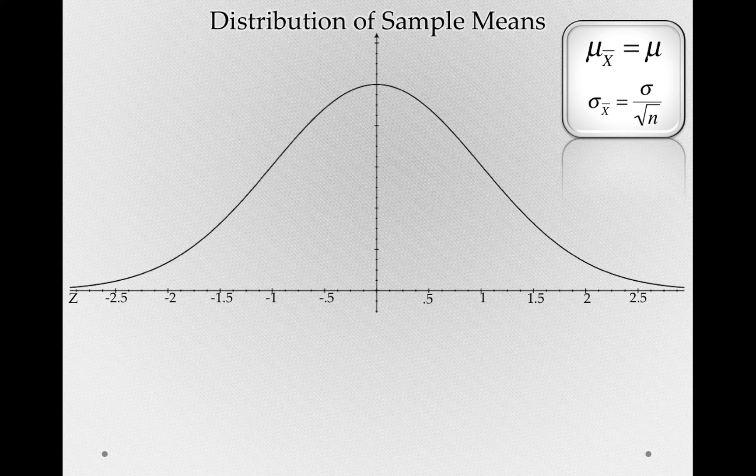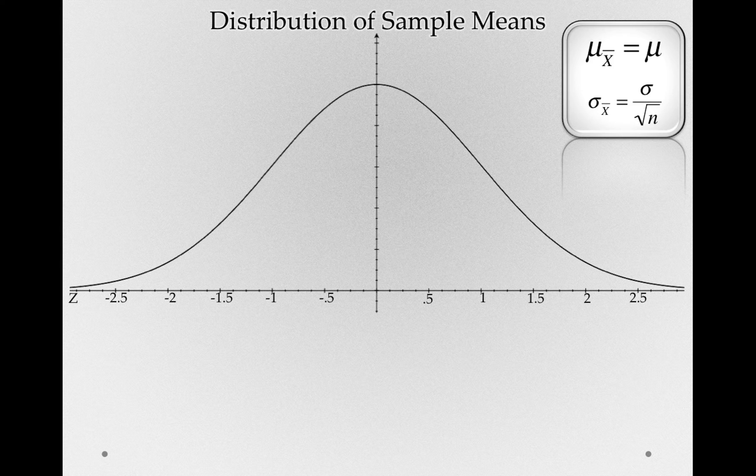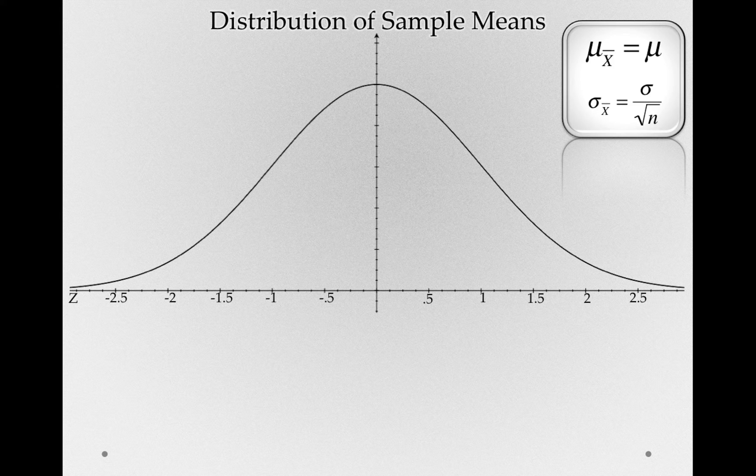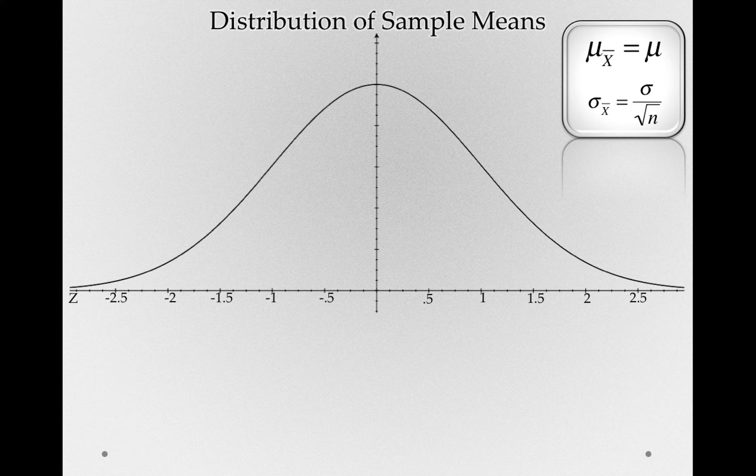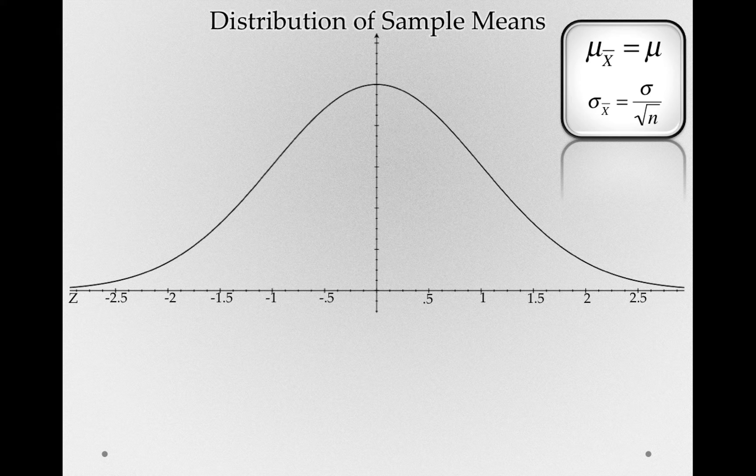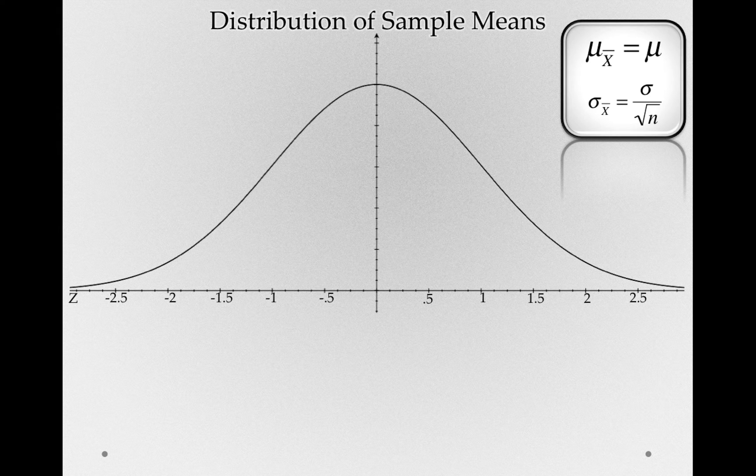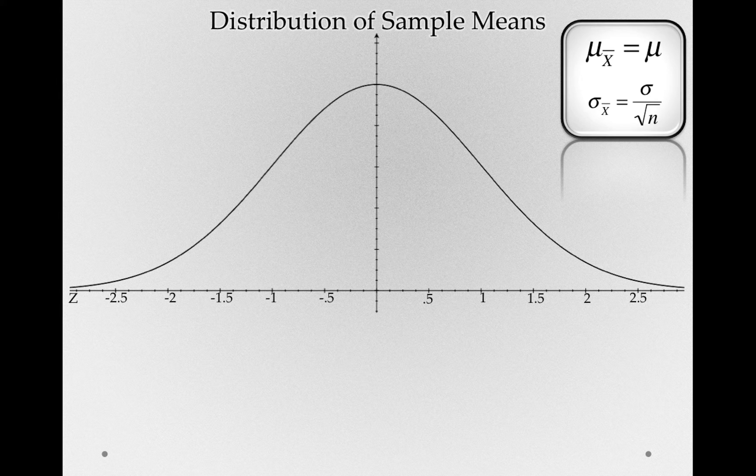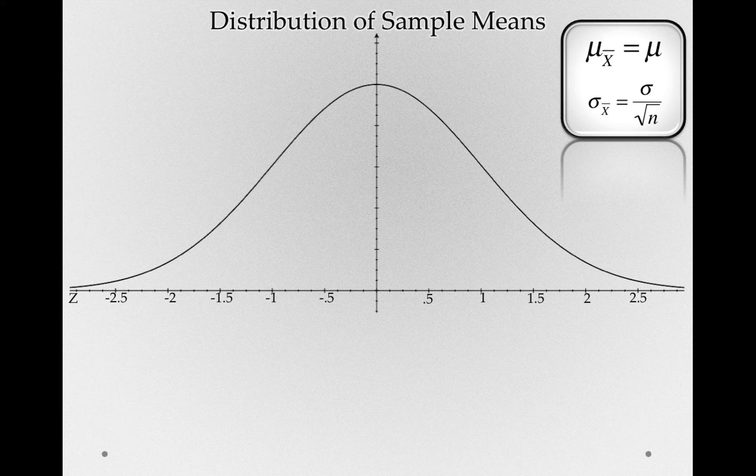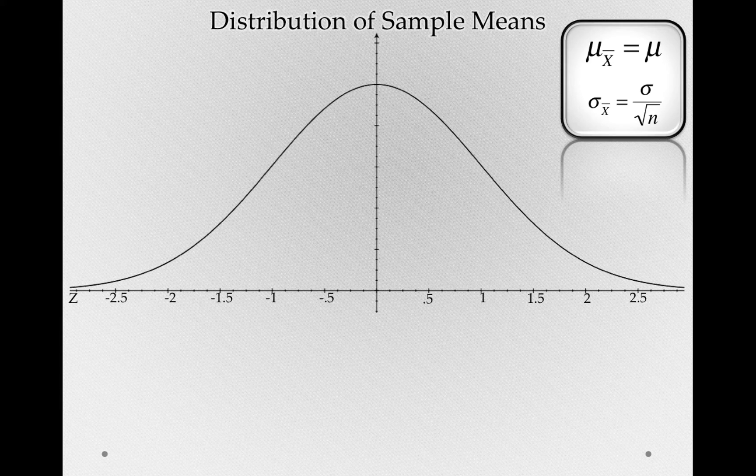we knew that this distribution of sample means would be normally distributed and would have a mean, that is, the mean of a sampling distribution of sample means, that was equal to whatever population we're taking samples from. And we also knew the standard deviation of the sampling distribution of sample means, that is, the standard error. Without ever doing our simulation studies, we knew the characteristics of the sampling distribution in this context.